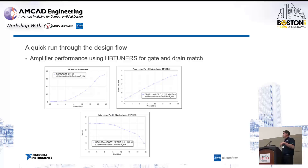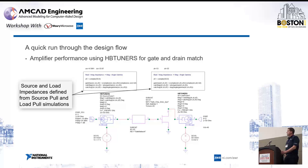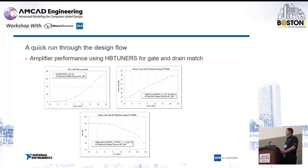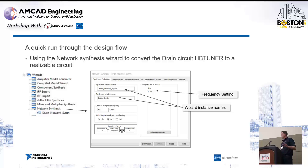We're able to then put in the source and load impedances defined from the source and load pull, and just verify that we're getting the performance we need from the device — plotting swept performance for power efficiency, gain, etc. as a function of dynamic range, and verifying that the device model is giving the performance we were seeing from the load pull. Now we have our impedances defined with idealized tuners, so the next step is to synthesize realistic matching networks for both the load and the source.